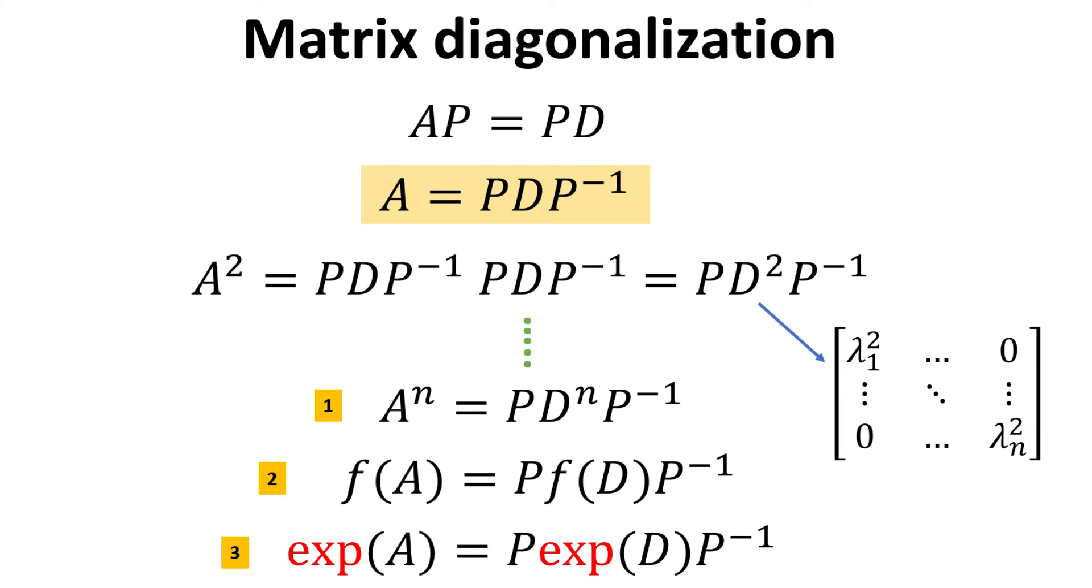Now, starting from what we just obtained, AP equals PD, we can multiply both sides of the equation by the matrix P inverse on the right. This yields us an expression for the matrix A, which is equal to P multiplied by the diagonal matrix D and P inverse, as shown in the yellow box.